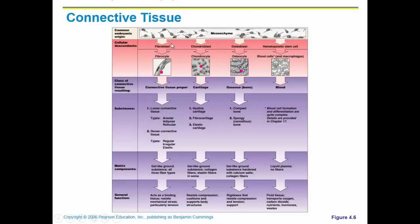They differentiate into a fibroblast, a chondroblast, an osteoblast, or a hematopoietic stem cell. When you see 'blast' at the end of a cell name, you can always assume that it is an immature or baby cell. They will make it through their life cycle and become a 'cyte.' So a fibroblast becomes a fibrocyte, chondroblast becomes a chondrocyte, etc. The exception is the hematopoietic stem cell, which becomes the different blood cells and macrophages. But all connective tissue cell types come from this one embryonic cell called mesenchyme.